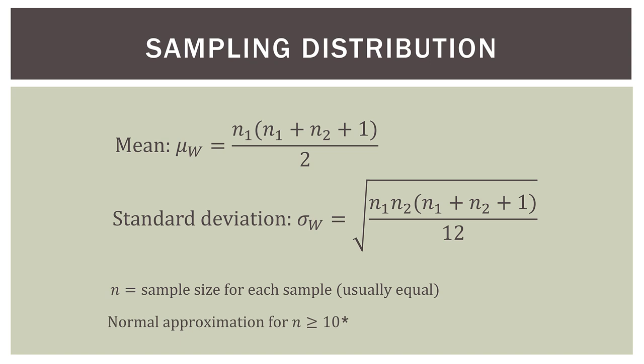We can use the normal distribution approximation if our sample sizes are greater than or equal to 10 — though that number can differ depending on the resource you're using. One book has it at 10, another at 7. Stick with whatever your class uses, or use 10 since it's more conservative. Also note that the subscripts and notation for these formulas can vary by book — you might see mu sub W listed as E(T), the expected value of T. But in the end, it's all the same.